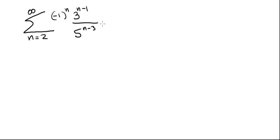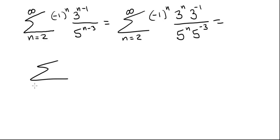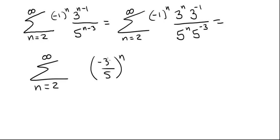Note that this series starts at 2 and not at 0 or 1 as in previous examples. So the first thing we're going to do is express the series as: from 2 to infinity, (-1)^n · 3^n · 3^(-1) divided by 5^n · 5^(-3). Since -1, 3, and 5 are all raised to the nth power, we can combine them to get: (-3/5)^n times (3^(-1) / 5^(-3)), which is 125/3.